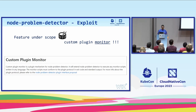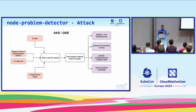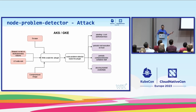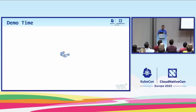Feature on the scope: the custom plugin monitor. That's a feature that extends the core functionality of node problem detector, and it lets us define new health checks. This is the chain of attack: we go from the ability to write a script into a certain folder, node problem detector picks it up, and then we get all kinds of bounties in the form of persistency and periodic execution.